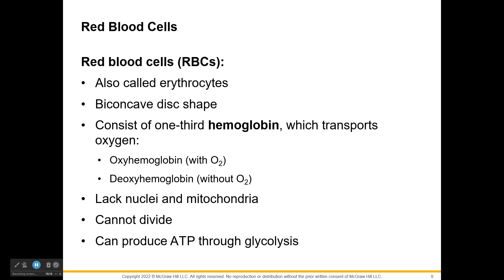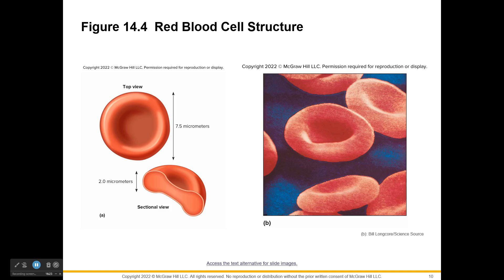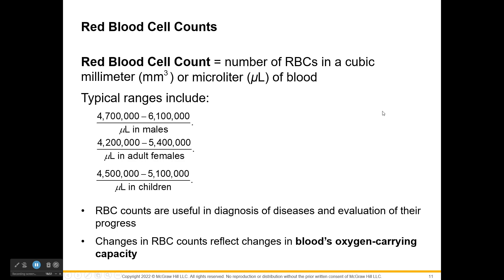Red blood cells can still produce a small amount of ATP through glycolysis — breaking sugar in half to extract some energy — even without mitochondria. Under the microscope, the biconcave center appears nearly transparent, almost like a donut. Red blood cell count is the number of RBCs per cubic millimeter or microliter of blood, with typical ranges for males, females, and children. This count helps diagnose and evaluate patients and reflects the blood's oxygen-carrying capacity.